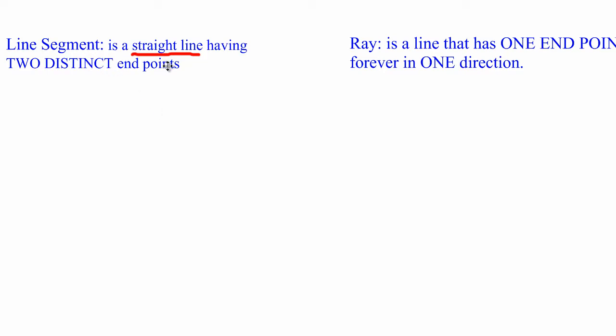This is a straight line having two distinct endpoints. And what do we mean by a straight line? Well, we would have already looked at that definition in the previous video so you could check that. And what do we mean by two distinct endpoints? I'm simply saying then the line segment has a starting point and it has a finishing point.